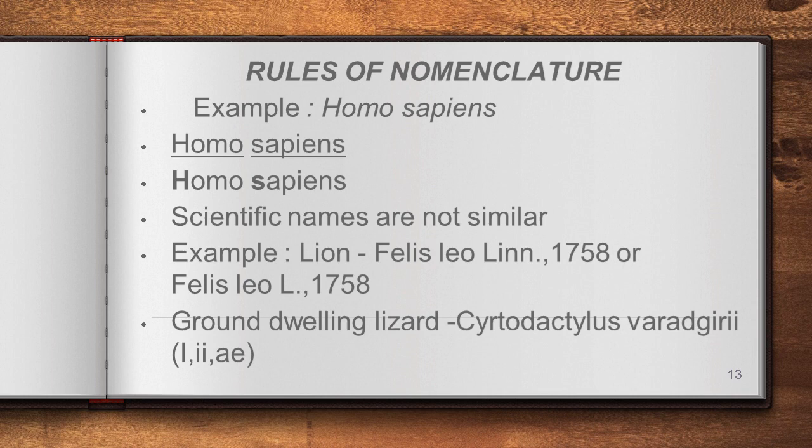The second rule: if the name is handwritten, the genus name and the species name should be underlined separately. For example, Homo is underlined separately, and sapiens is underlined separately.